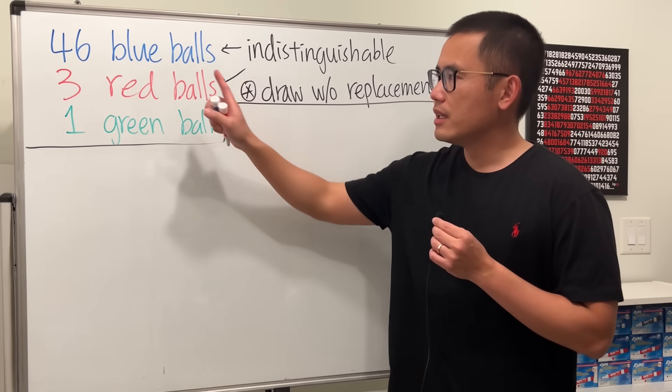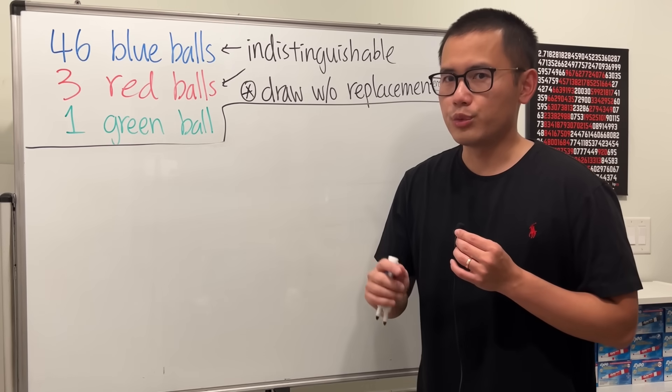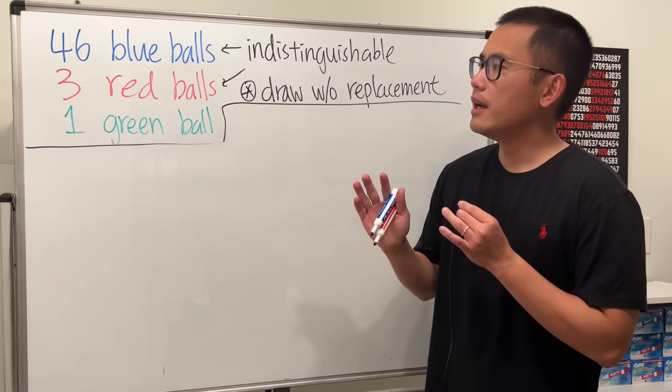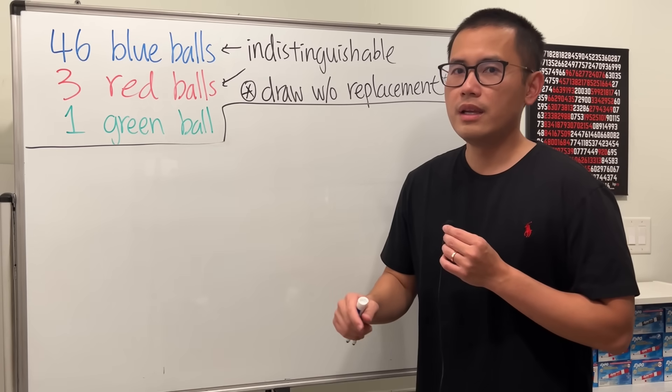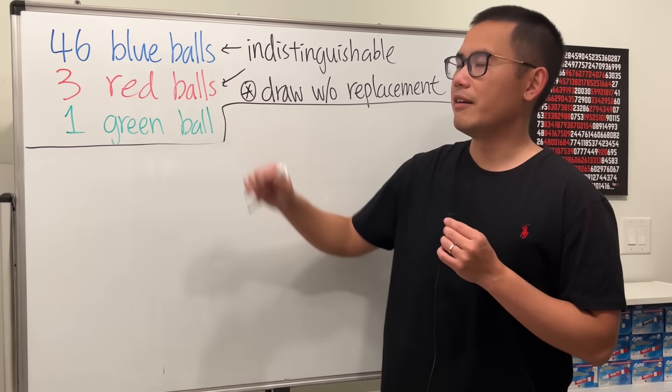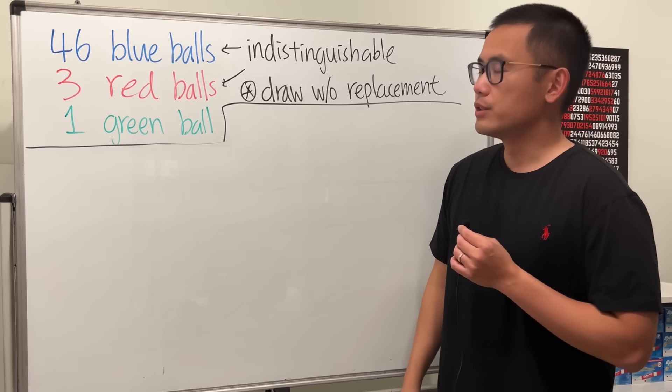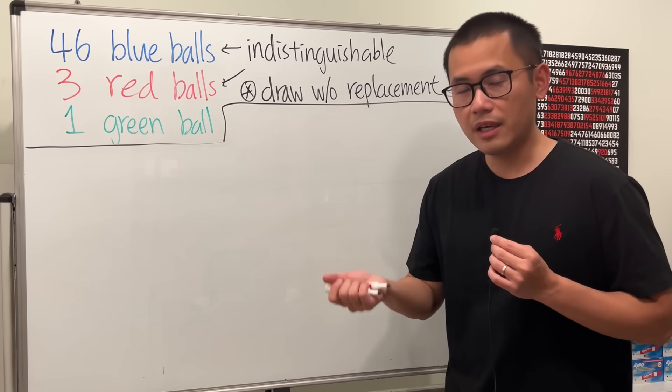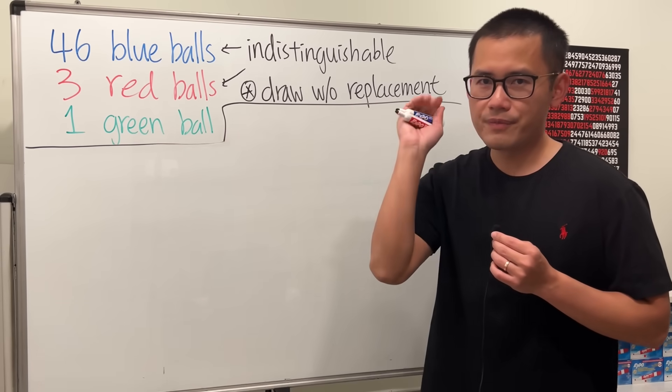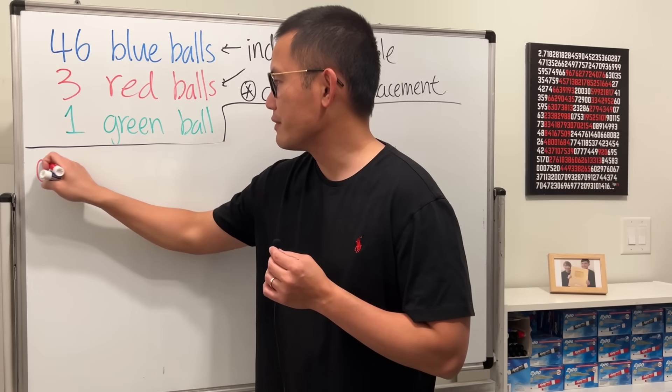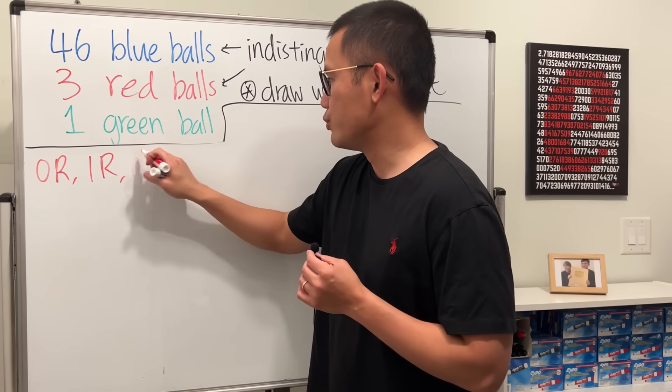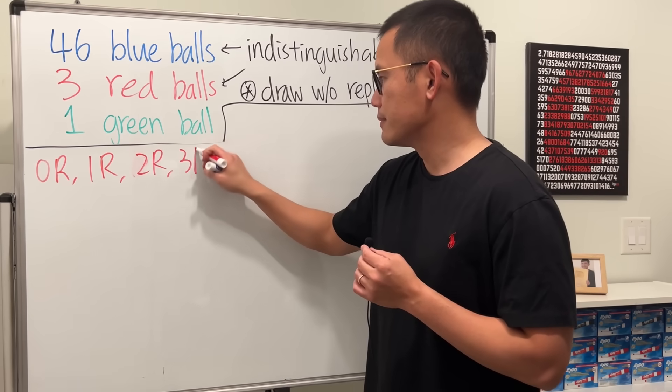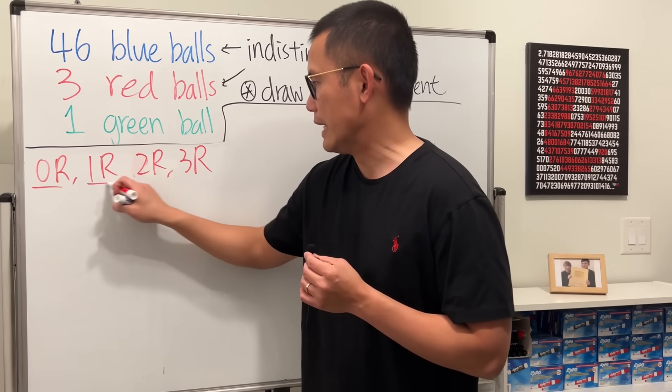And in fact, we are going to use this to help us break down into cases. Because we can think about it like, how many red balls can we get before we get a green one? And of course, in the process, we may have some blue balls in between. So in that way, how many cases are we going to get? 4, because we could have 0 red balls, 1 red ball, 2 red balls, and then 3 red balls. So we have these 4 cases.